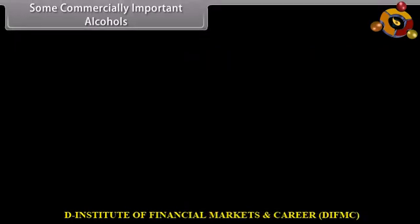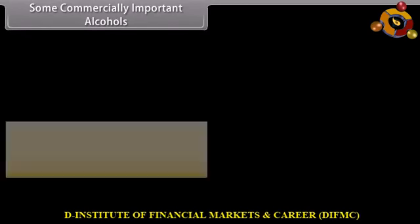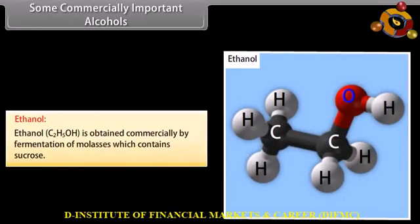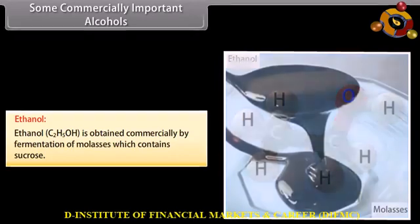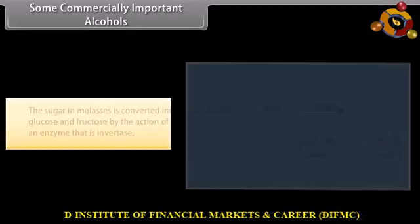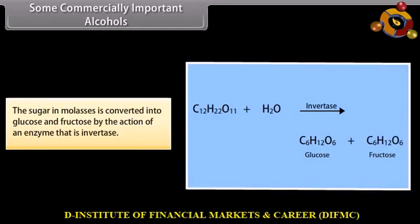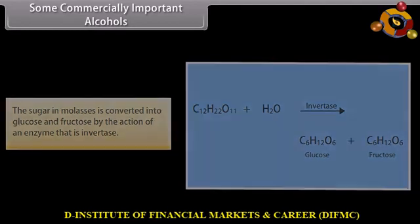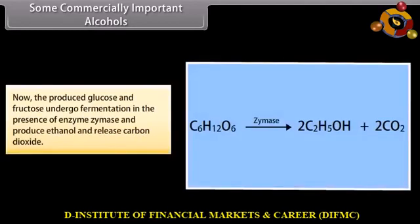Ethanol: ethanol is obtained commercially by fermentation of molasses, which contains sucrose. The sugar in molasses is converted into glucose and fructose by the action of the enzyme invertase. The produced glucose and fructose then undergo fermentation in the presence of the enzyme zymase, producing ethanol and releasing carbon dioxide.